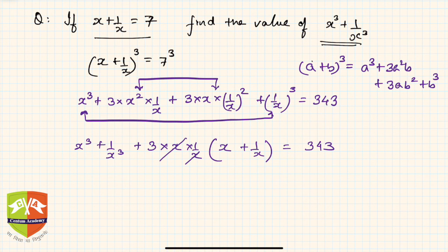Now this x and this x goes and we already know x plus 1 by x value, that is 7. So hence x cube plus 1 upon x cube plus 3 into 7 equals 343.